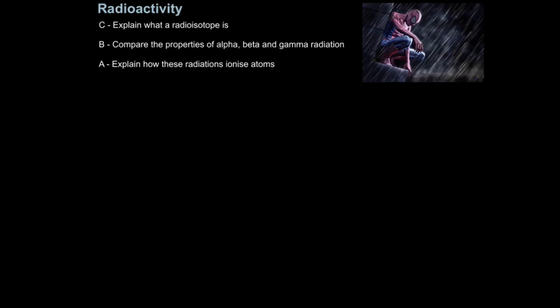In this lesson we're going to look at radioactivity. The first aim is to explain what a radioisotope is, then compare the properties of alpha, beta and gamma radiation, and finally explain how these radiations ionise atoms.